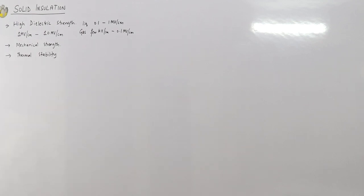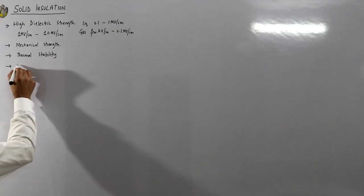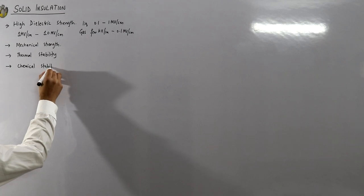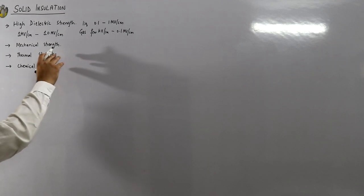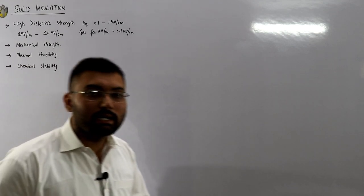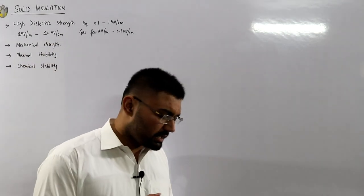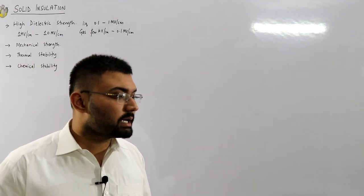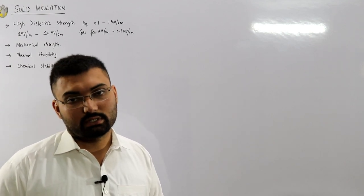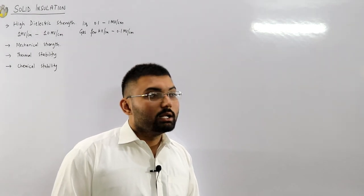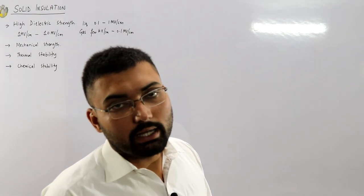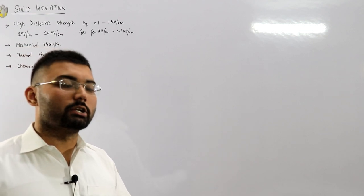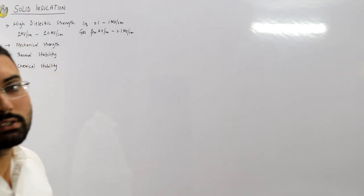Chemical stability is another property. Thermal instability can cause chemical instability, and properties also deteriorate with time. Just like a water bottle has an expiry date, any insulating material loses its chemical properties over time. Temperature accelerates this chemical degradation.